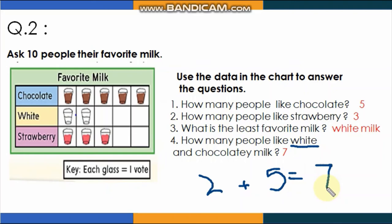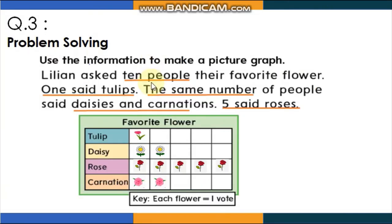Here we go — use the information to make a picture graph. Fatima asked 10 people their favorite flower: 1 said tulips, the same number of people said daisies and carnations, and 5 said roses. Look at the picture graph — it shows favorite flowers. Let's analyze the data: 10 people were surveyed.